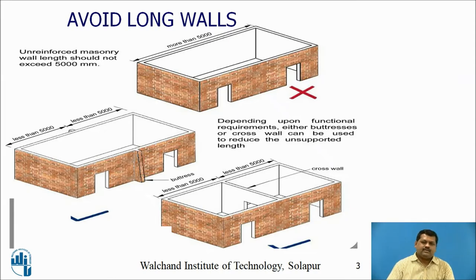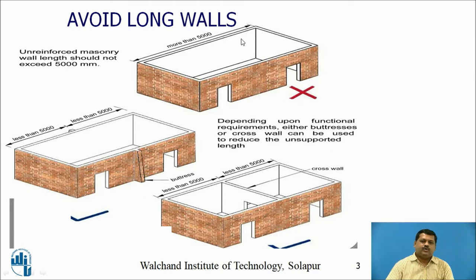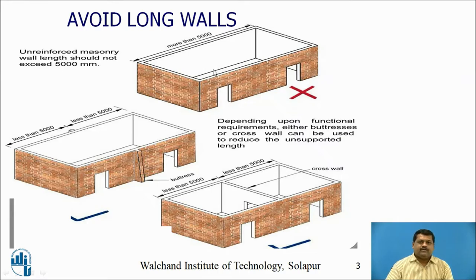There are various measures, so we are discussing a few prominent ones. The first is to avoid long walls — that is most important. As shown in the sketch, any masonry wall that is unreinforced should not exceed 5,000 mm, that is 5 meters in length. Otherwise it will act as a slender wall, which is very vulnerable to damage during an earthquake.